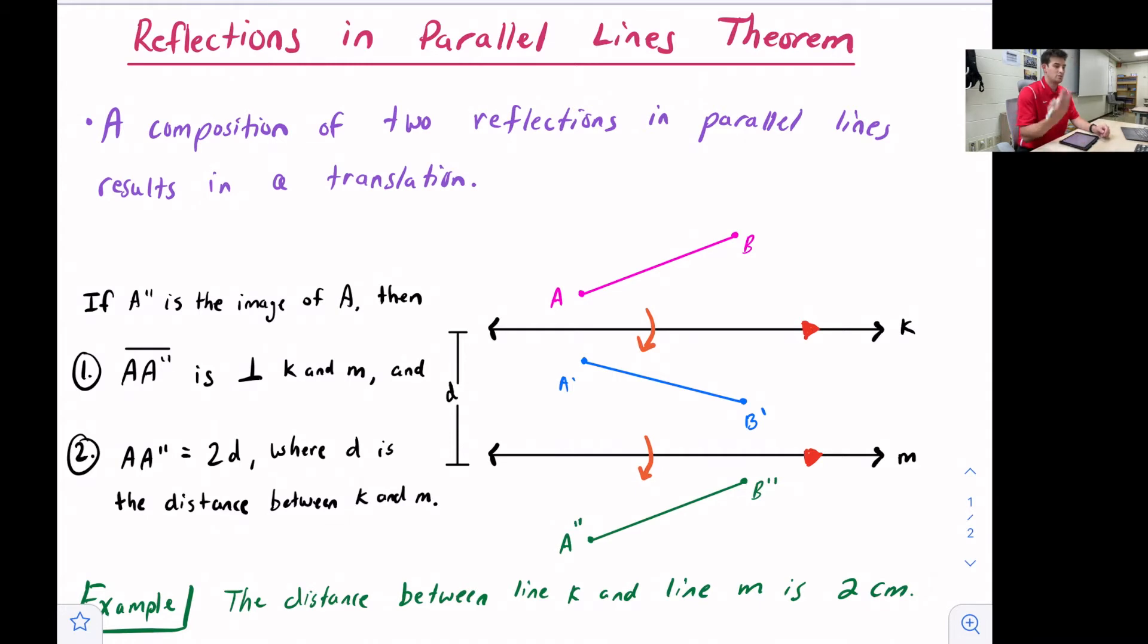Remember a reflection is when we flip an object over a line of reflection and it's kind of like its mirror image. So if we do that twice, that's what a composition means - we're doing two reflections. So we reflect something this way and then we reflect it back over another line, then the orientation of our third shape will be the same orientation as our first shape. So it can be transformed by just a translation or a slide.